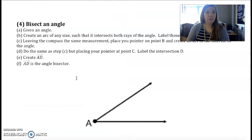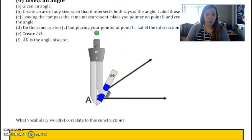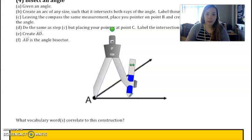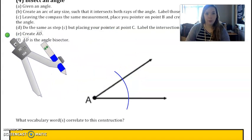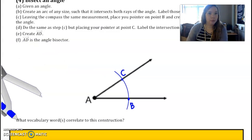All right, one more for today: bisect an angle. We've bisected a segment, now we'll bisect an angle. Given an angle, create an arc of any size that intersects both rays of the angle, label those B and C. So similar to how we started by copying the angle, make an arc of any size. Label those points B and C. It says leaving the compass the same measurement, place your pointer on point B and create an arc in the interior of the angle. Do the same as step C but for point C.